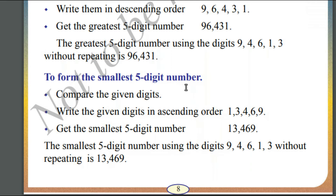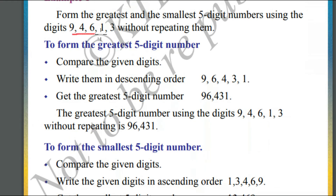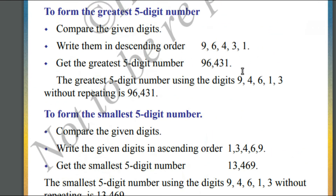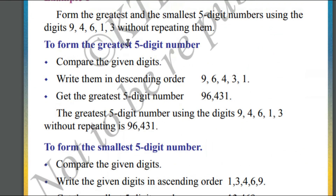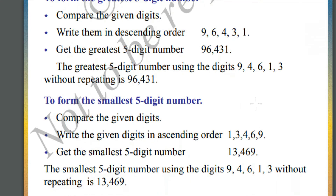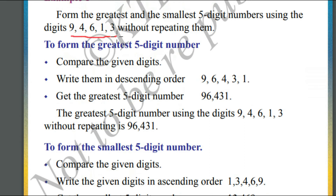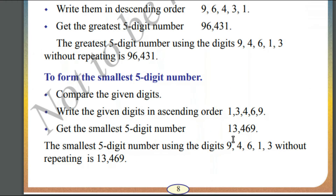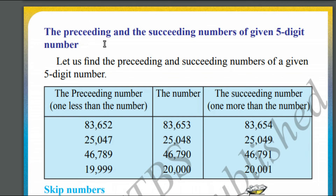To make the smallest five-digit number using these five digits, we will sort them in ascending order — from the smallest number to the largest. The smallest is 1, second smallest is 3, third is 4, fourth is 6, and fifth is 9. So the smallest five-digit number is 13,469 without repetition.